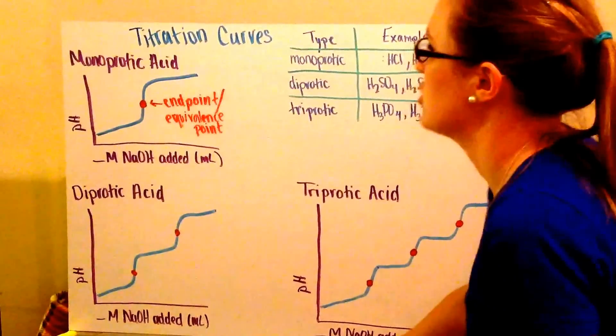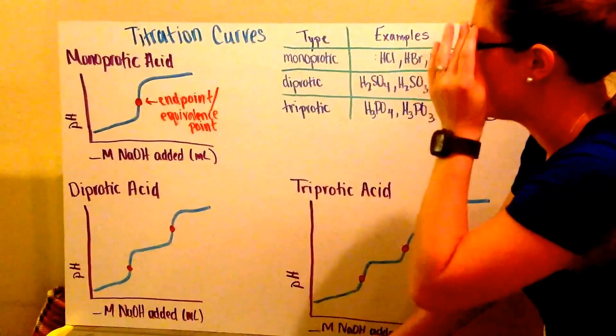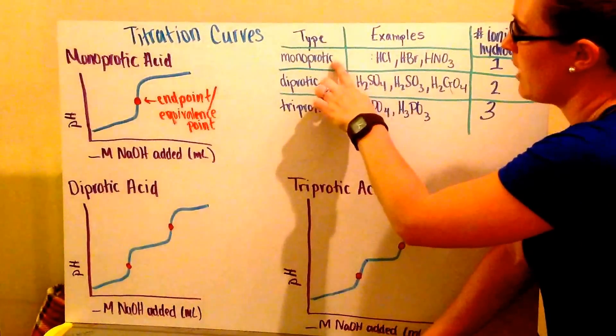Next I have my titration curves. There are three different types of acids we're going to talk about: monoprotic acids.